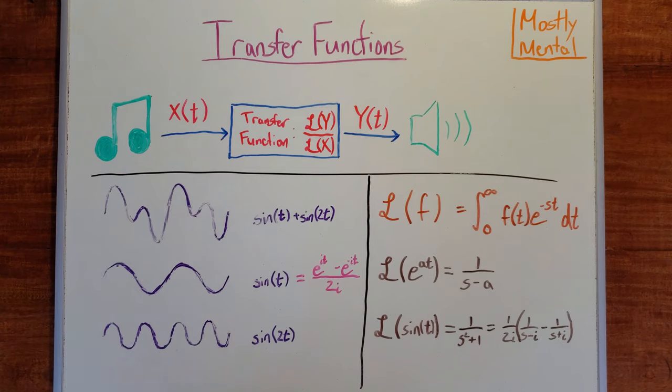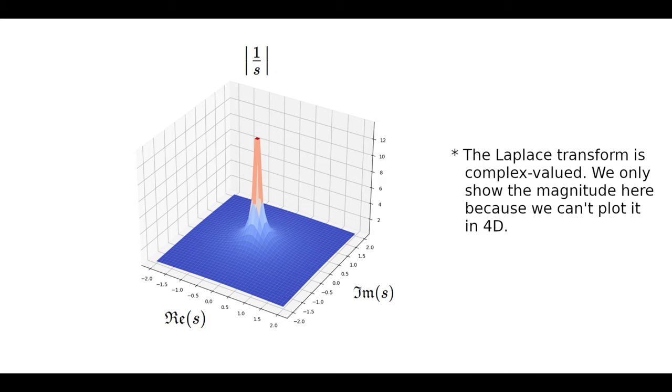For example, if we apply that to an exponential function, e to the a t, we get the Laplace transform is 1 over s minus a. Plotting that as a function of s, we get this pole stretching off to infinity at s equals a and falling off quickly nearby.